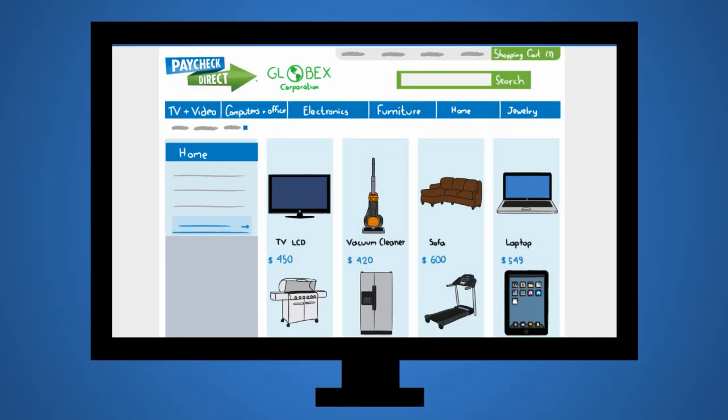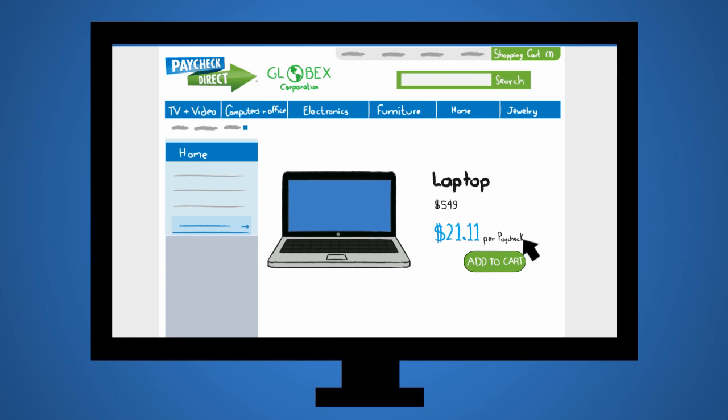Paycheck Direct works like any other online store, except the payments are taken in affordable installments straight from your paycheck. It even shows you the price per paycheck, so you can know exactly how much will be deducted from each pay.